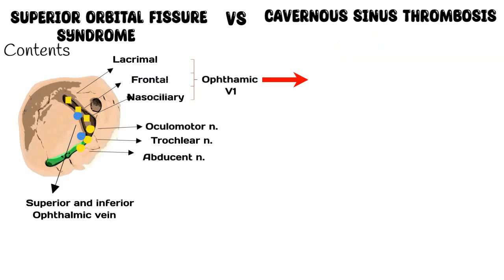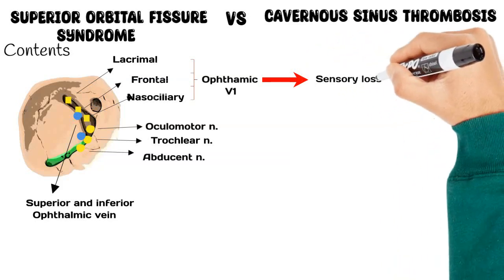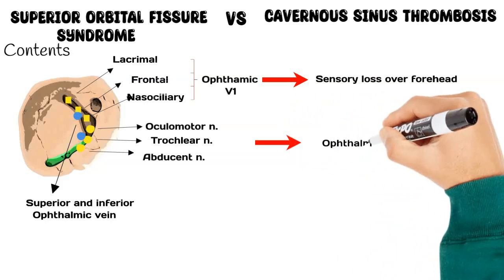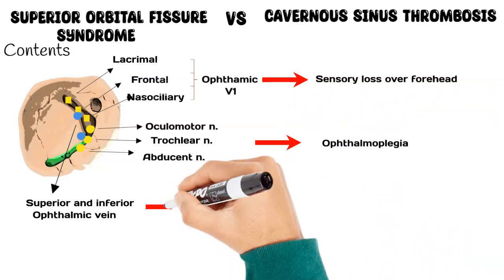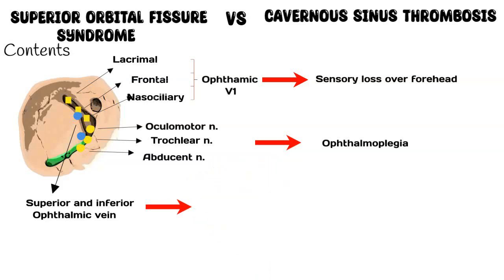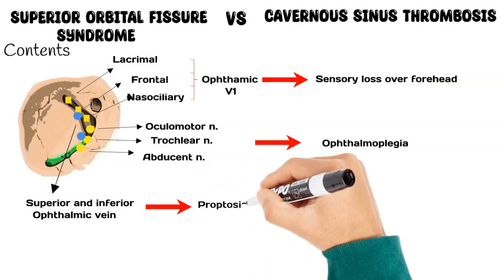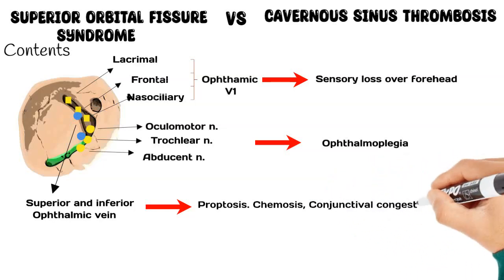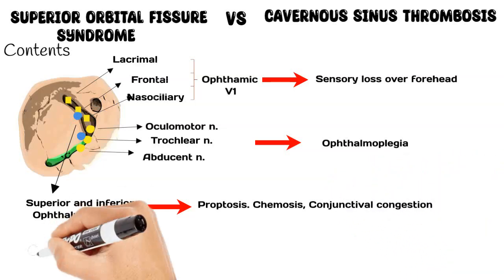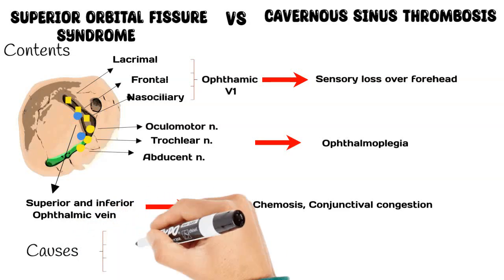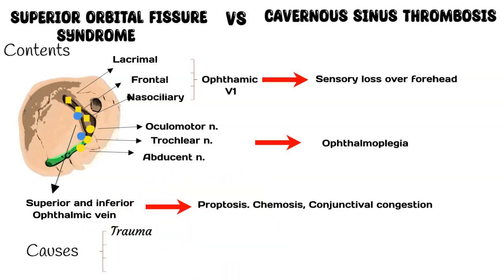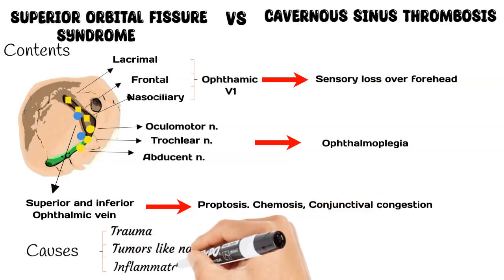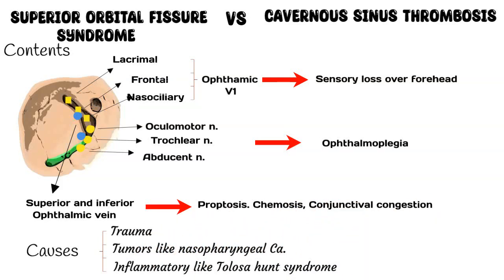We also have the superior and inferior ophthalmic veins, which drain the orbital content. Any lesion at the superior orbital fissure will result in sensory loss over the forehead and ophthalmoplegia from involvement of the oculomotor nerves, while occlusion of the ophthalmic veins results in proptosis, chemosis, and conjunctival congestion. Causes include trauma, tumors like nasopharyngeal carcinoma, and inflammatory conditions like Tolosa-Hunt syndrome.